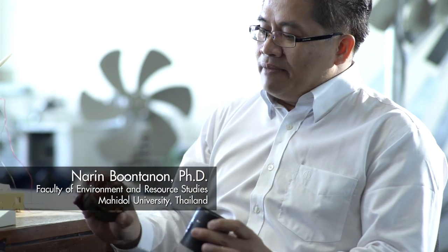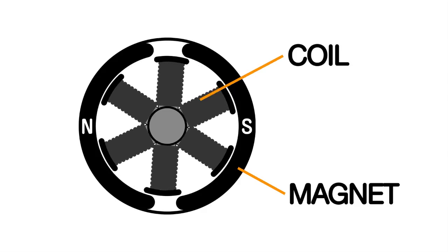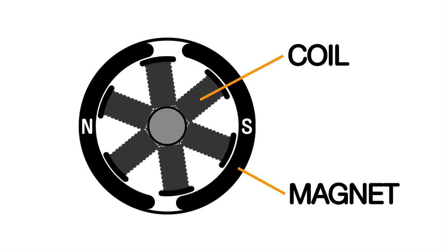When we look at the mechanism of electricity production in a generator, we have two parts: one part is the coil and one part is the magnet. Normally we fix one part and let the other part move — just only one part moving.